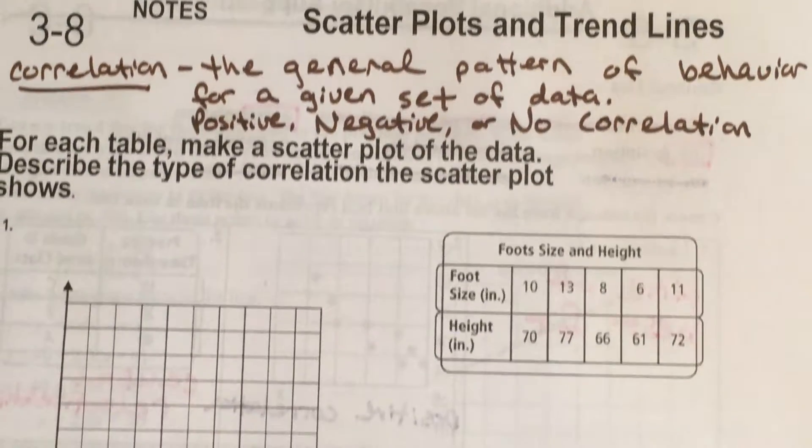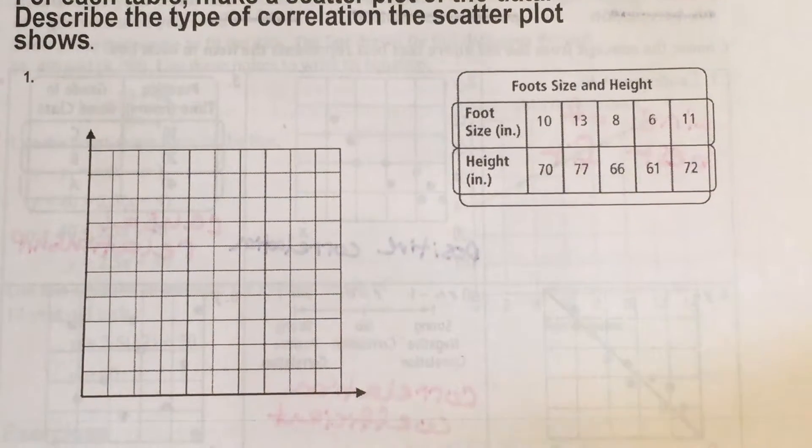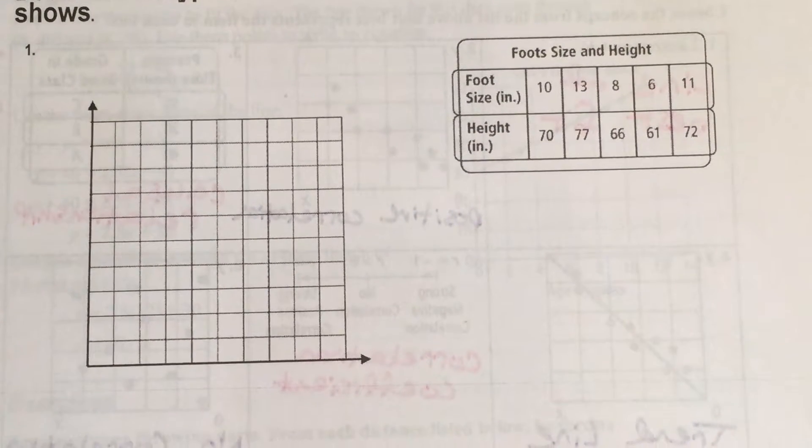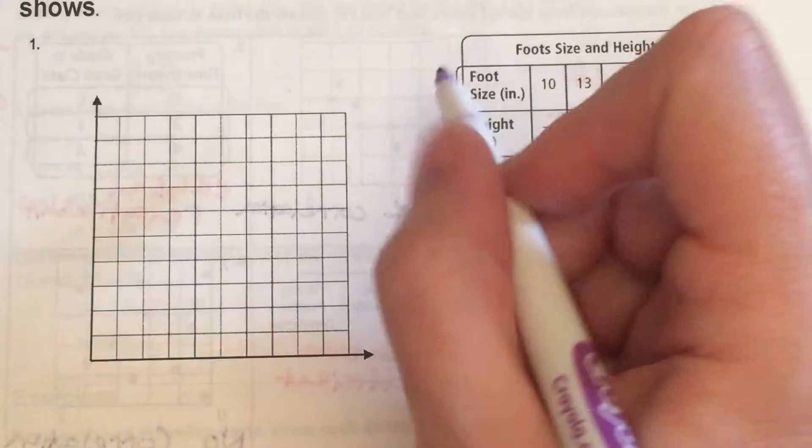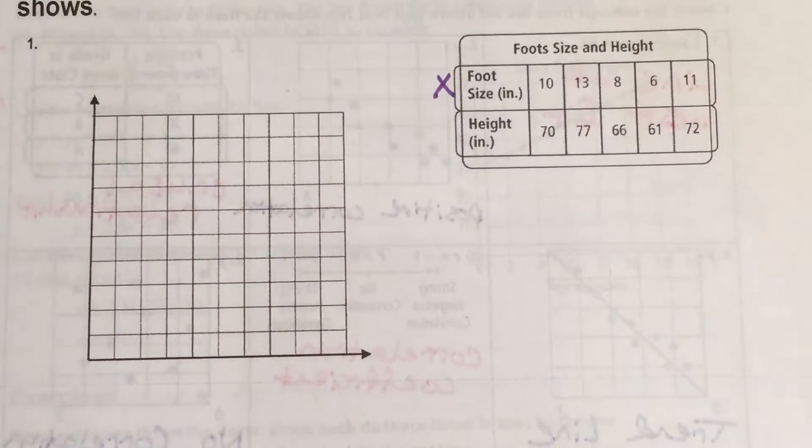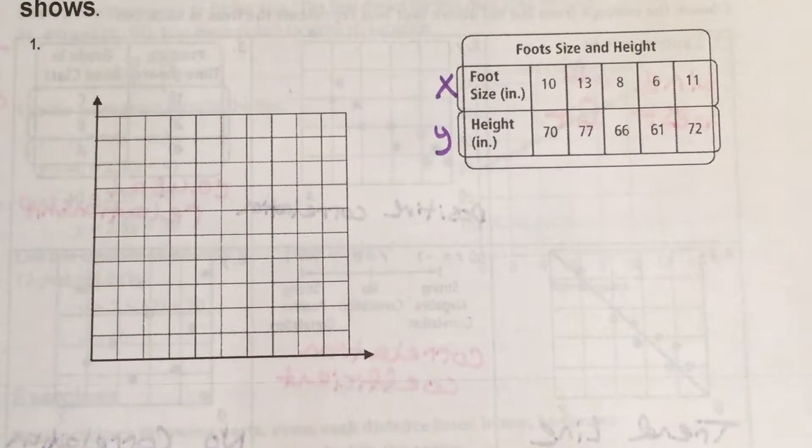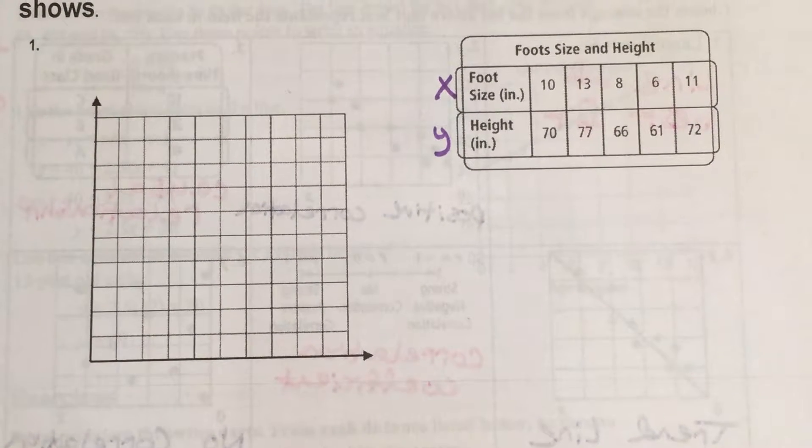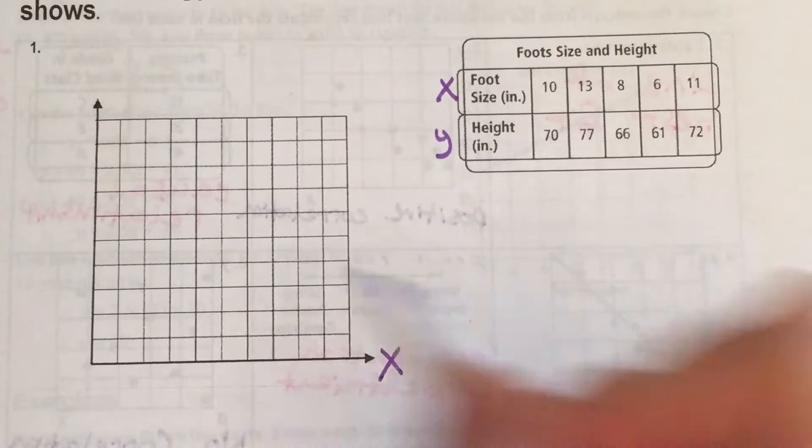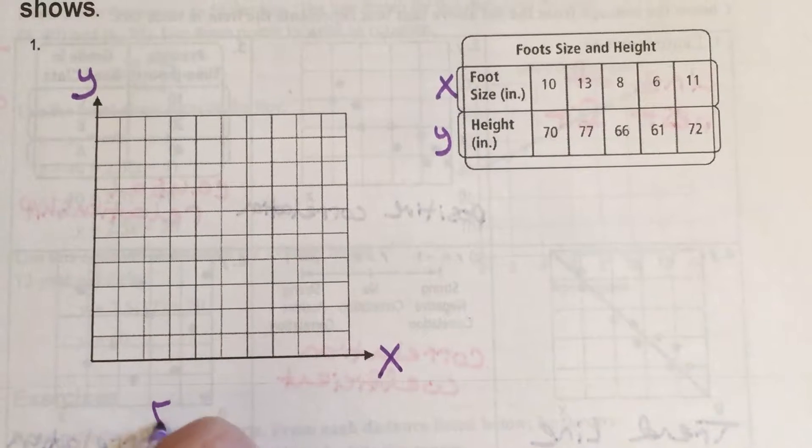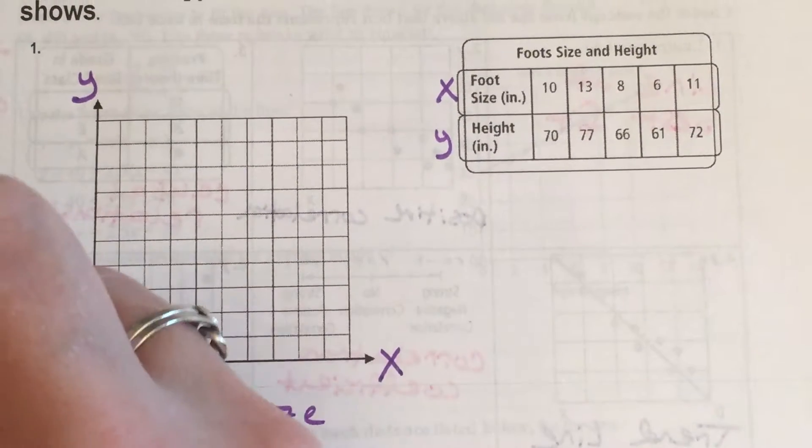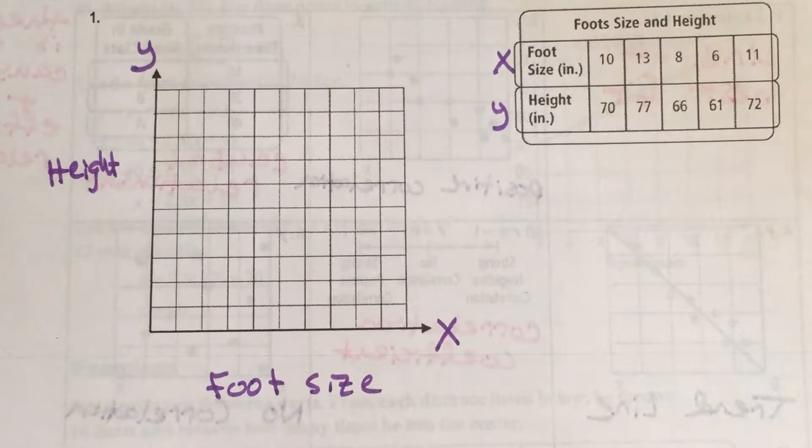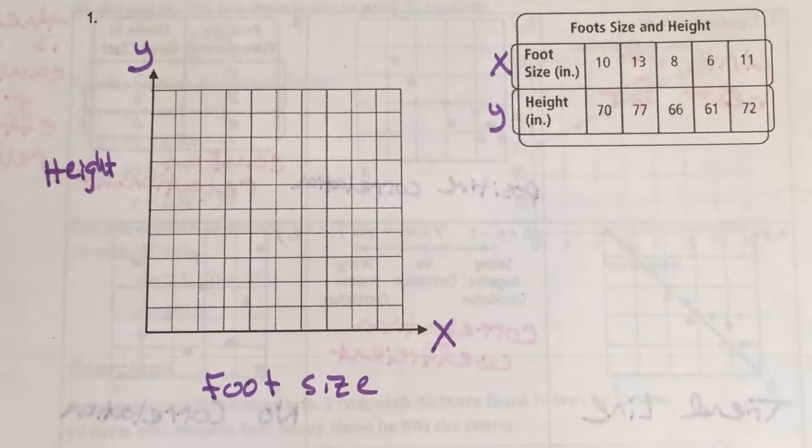So let's make the scatter plot and then decide for problem number one. Looking at problem number one we are discussing foot size and height. Usually, almost always, unless otherwise instructed, your top row will be the X values and your bottom row will be the Y values. Every once in a while you will get specific instructions that will say to do otherwise, but you really have to look for those.